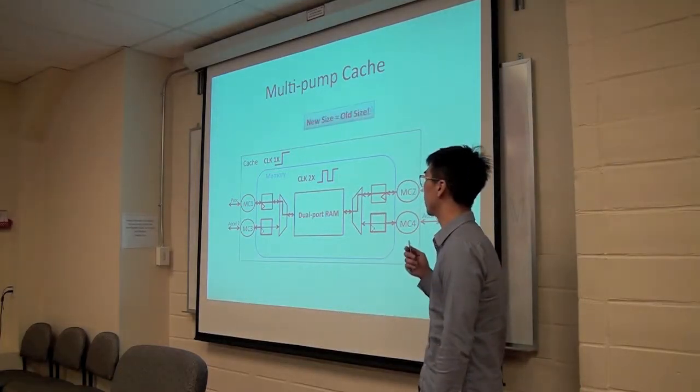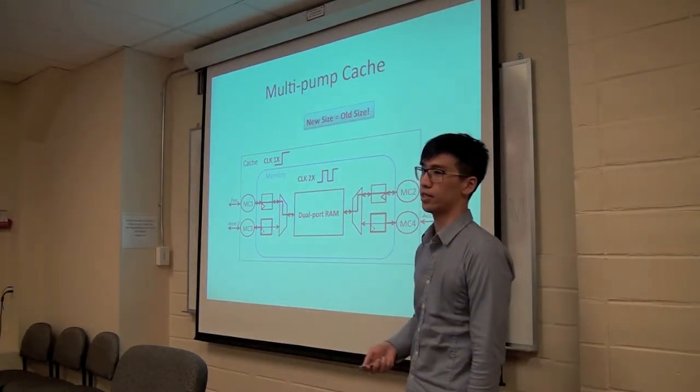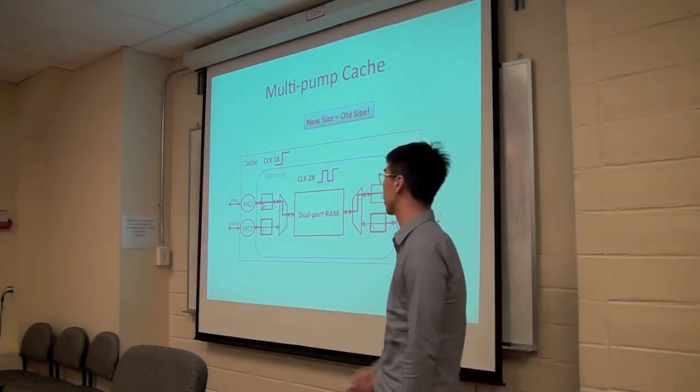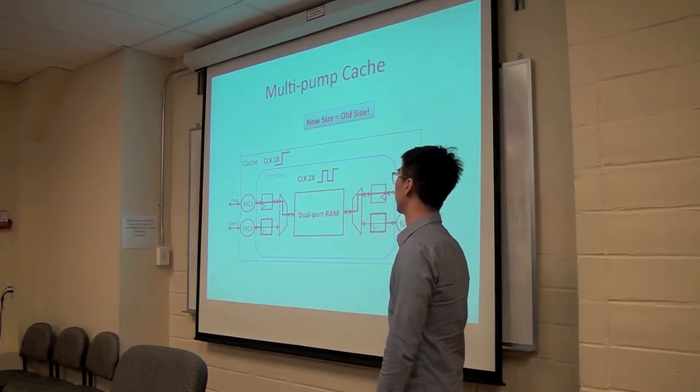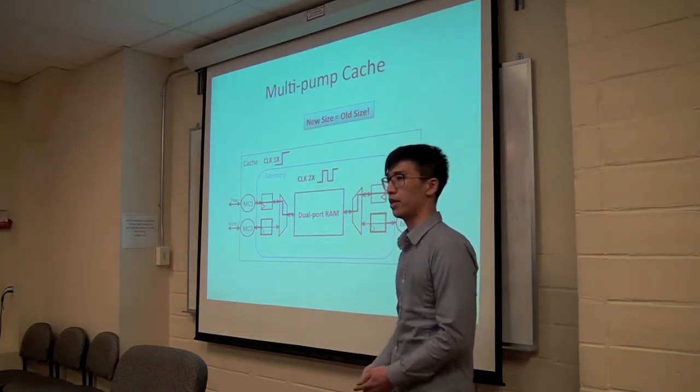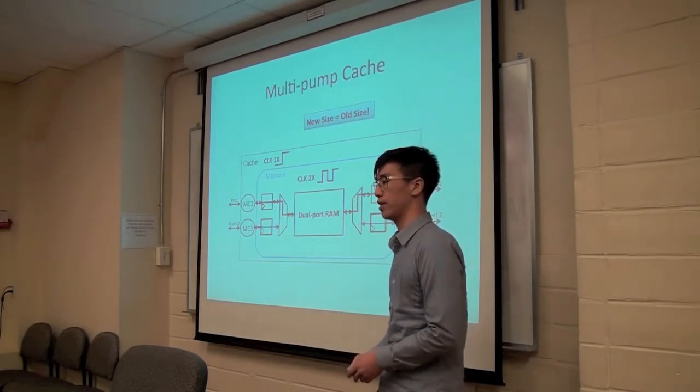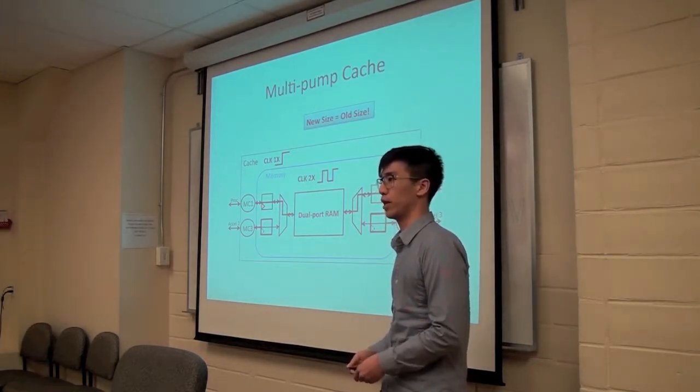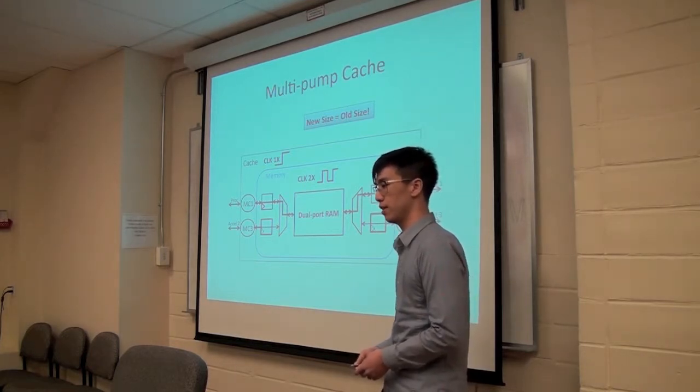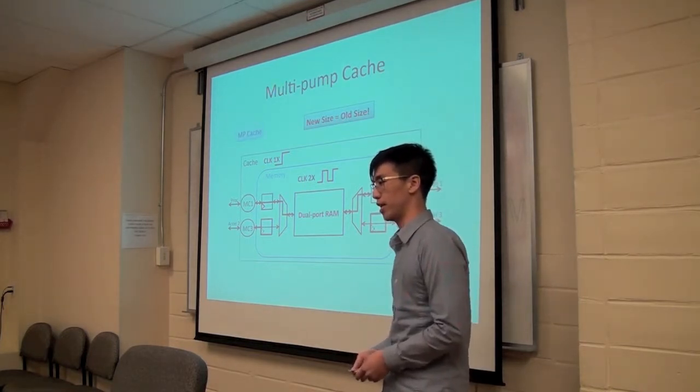So from the system's perspective, you can see that four accesses are done in one clock cycle of the slow clock. And the advantage of this method is that it does not replicate memory size at all because it is one piece of memory, but it has a caveat that the system has to be slow enough so that the memory can be pumped at twice the clock speed of the system. And we call this the MP cache.